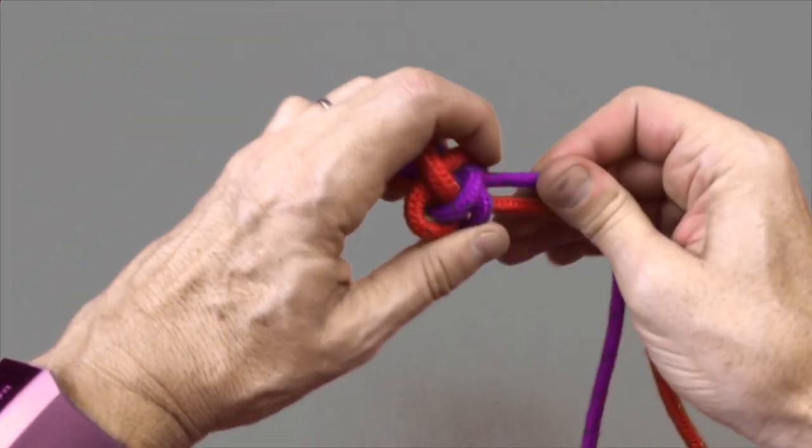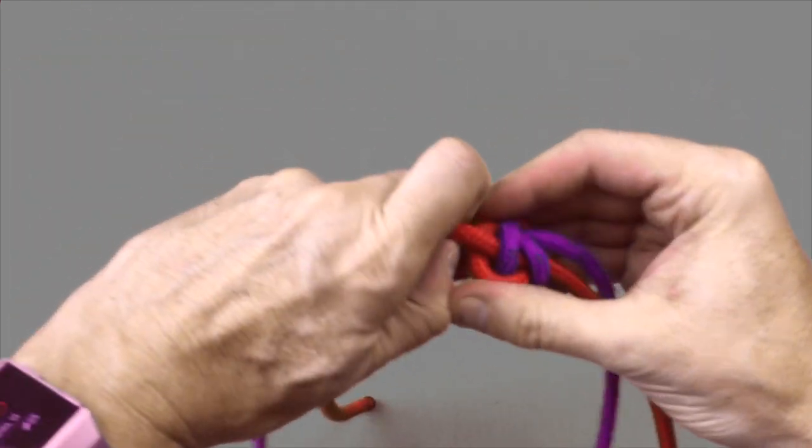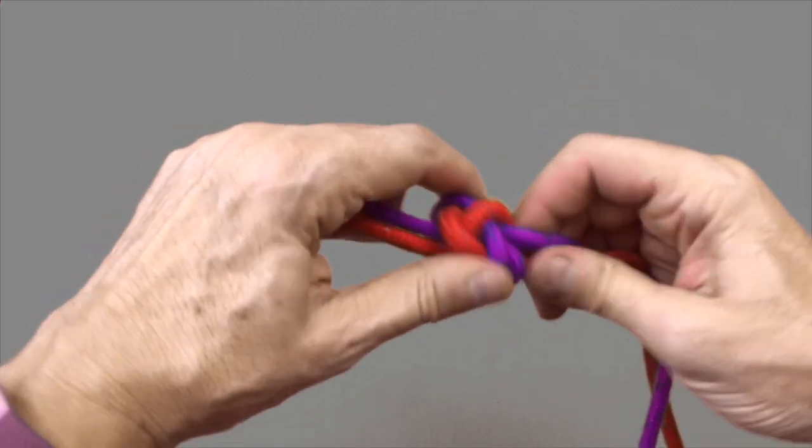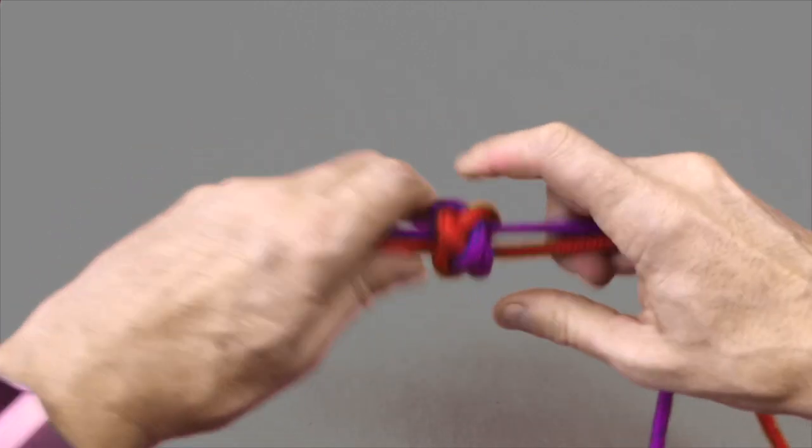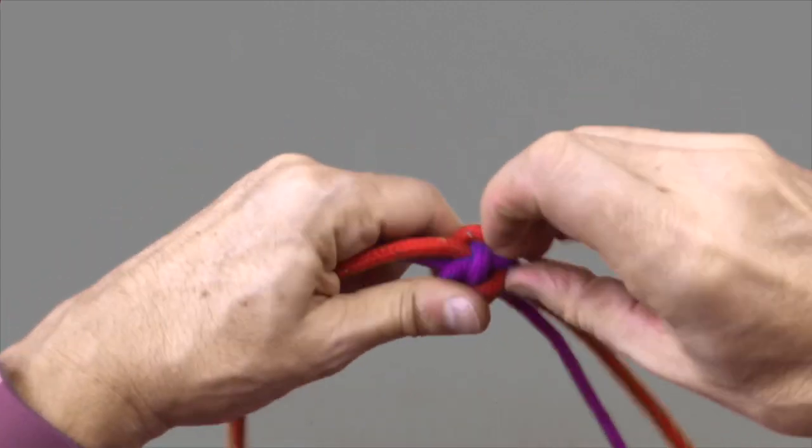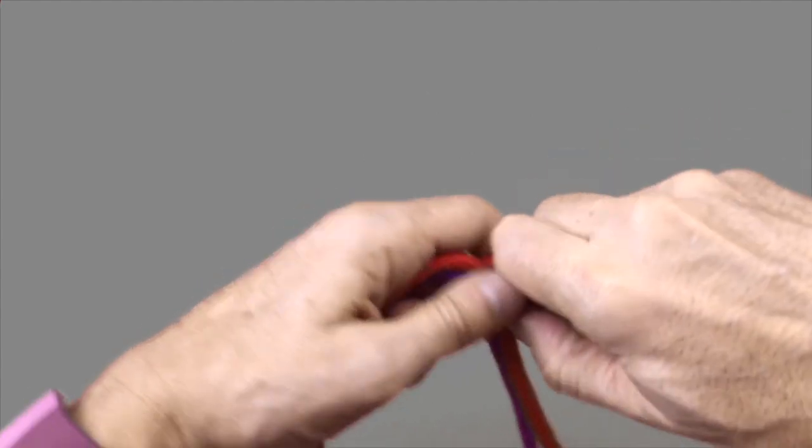This can be a little tricky but if you take it slowly moving each of the cords a little bit at a time, it won't be long until you have a tight little ball which completes the diamond knot.